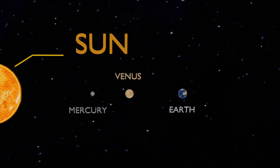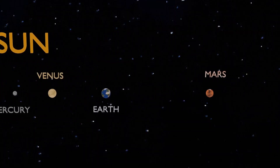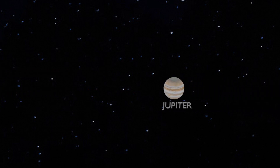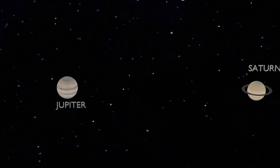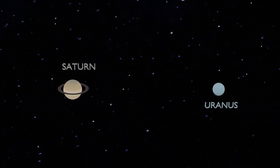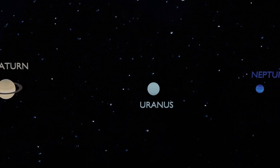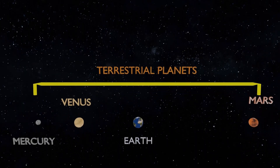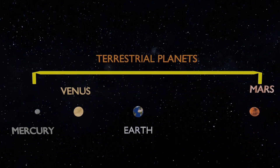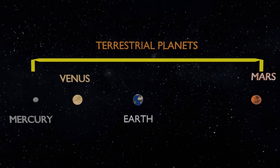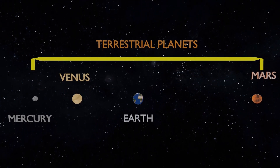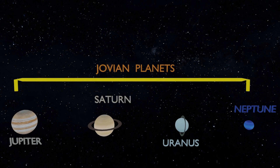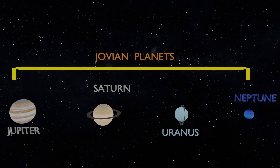The solar system has eight planets. The solar system is divided into two classes: terrestrial planets and Jovian planets.